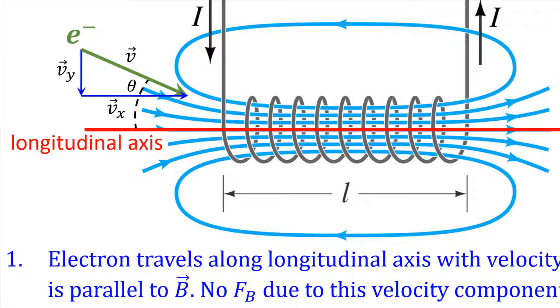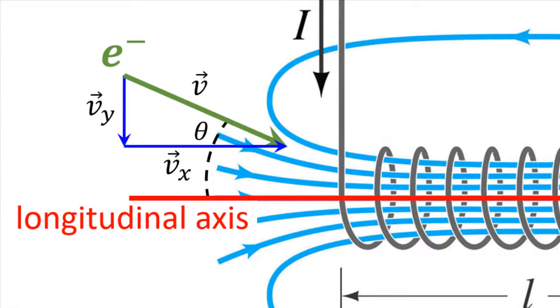Here's some more detail. The electron is shot into one end of the solenoid at an angle with respect to the solenoid's longitudinal axis.